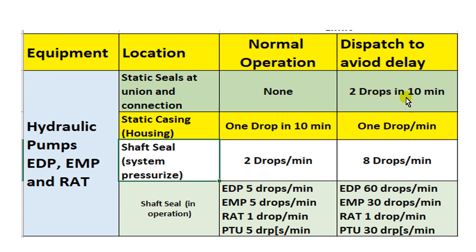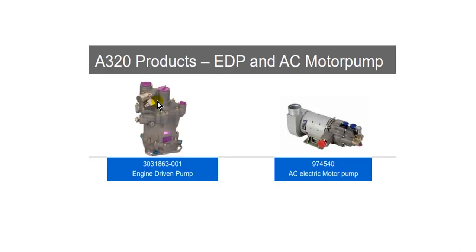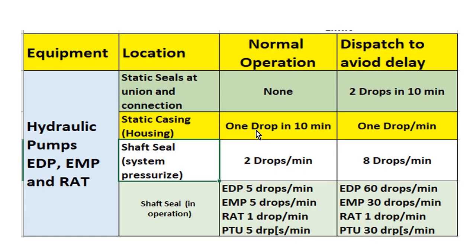Static seal at union and connection: during normal operation, none — no drops allowed. During dispatch: two drops in ten minutes. Static casing — this is the housing — here is the engine driven pump housing and the electric motor pump housing. Limit: one drop in ten minutes.